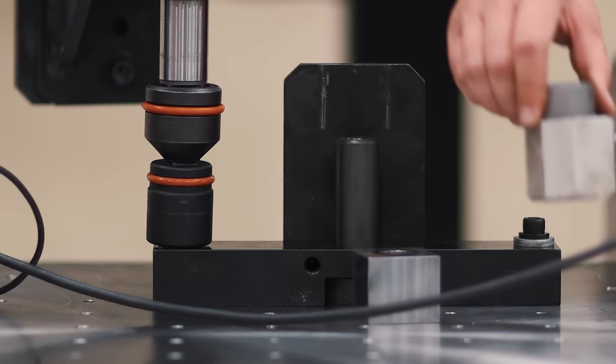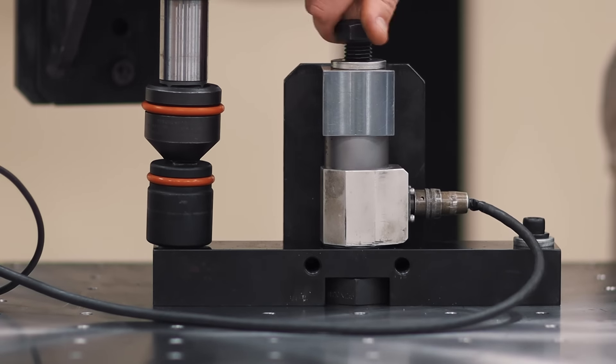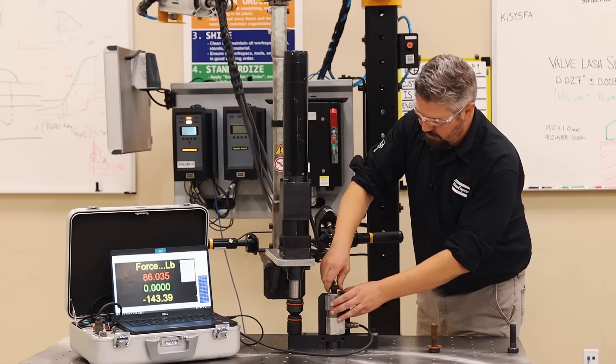Alright, so we're going to assemble our test joint with a load cell and the new bolt. We're going to put 500 Newton meters with the power tool.